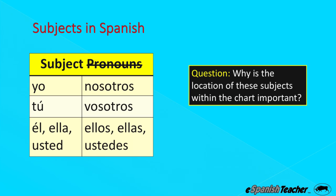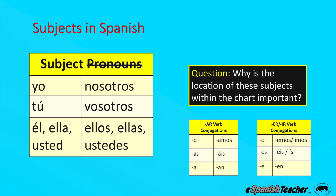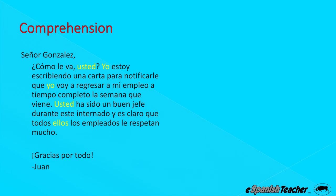Here's a quick question: why is the location of subjects within the Spanish subject chart important? The reason is because of the conjugation charts — the conjugation you select is determined by the subject you're speaking about. So if you're speaking about vosotros and the verb is AR, you must use the conjugation in the right-hand column — that A-I-S ending. Here is the comprehension exercise for this lesson. Pause the slide, read the passage out loud, and make an attempt to understand what's being said. Then press play and I'll walk you through the English translation.